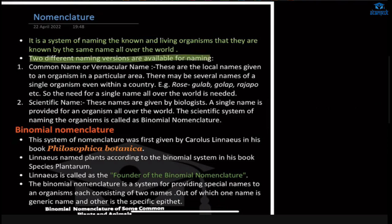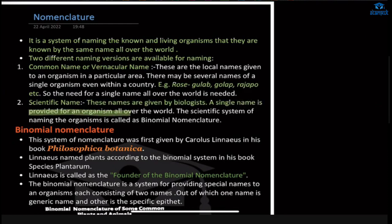Two different naming versions are available. The common name or vernacular name is the local name — whatever local names are used in different areas or parts of the country; even in different states the name changes. For example, rose can be called by several other names in various countries. That is why, to make one single name for every species all over the world, nomenclature is required. The scientific name is done with the help of nomenclature; a single name is provided for an organism all over the world.